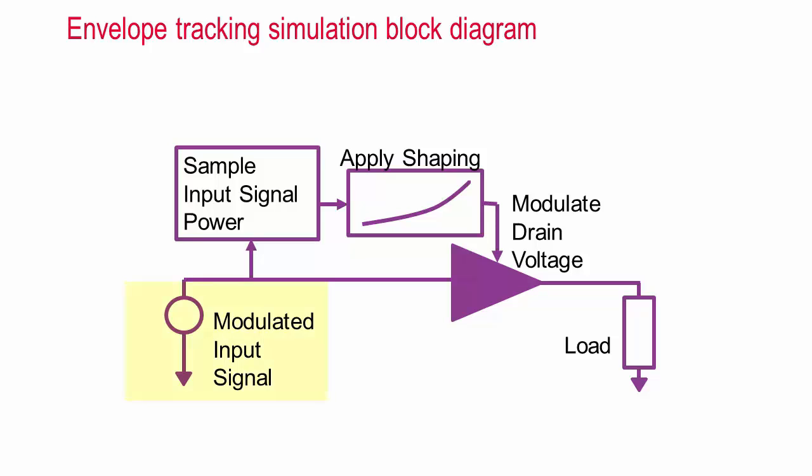Here we supply a modulated input signal to the input of a power amplifier. We detect the input signal power at each time instant and pass this through a shaping function to determine the corresponding bias voltage so the amplifier operates at high efficiency. The shaping table allows you to operate the amplifier at constant gain, constant gain compression, or always near the maximum efficiency point as the input power varies.